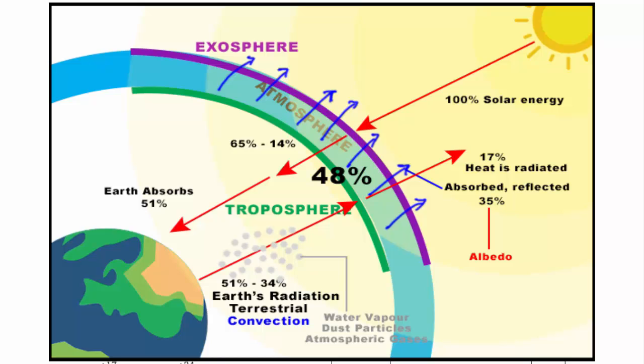If you notice, in total 48% of heat is absorbed by the atmosphere, that is 34% from terrestrial radiation and 14% from incoming solar energy.